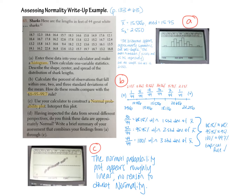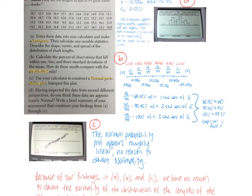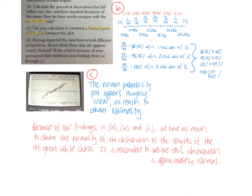For part D — the summary: because of our findings in parts A, B, and C, we have no reason to doubt the normality of the distribution of lengths of 44 great white sharks. Don't just stop at 'normality' — make sure you add context. Here we're discussing lengths of great white sharks. It is reasonable to believe this distribution is approximately normal. Bring your questions to class tomorrow.